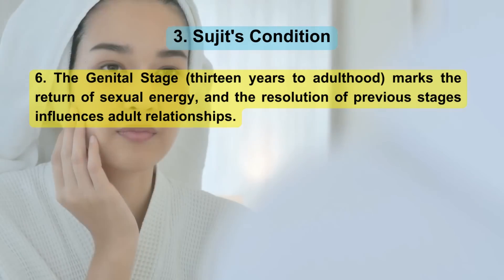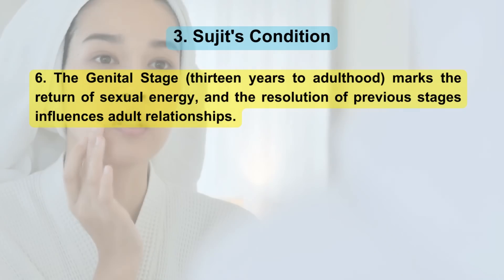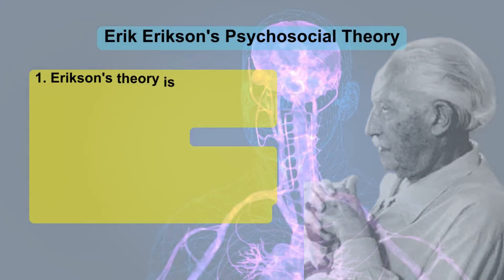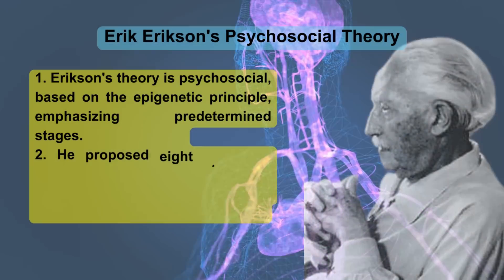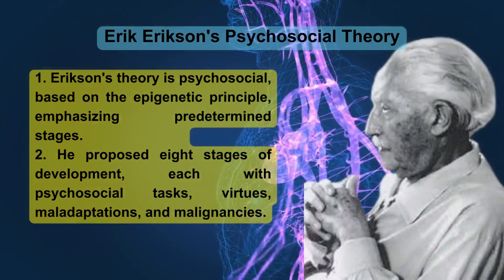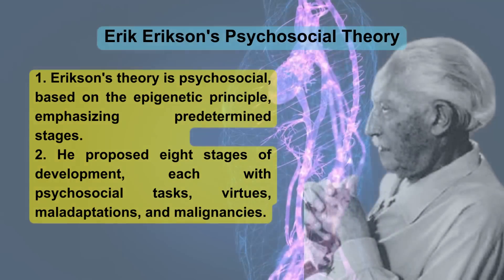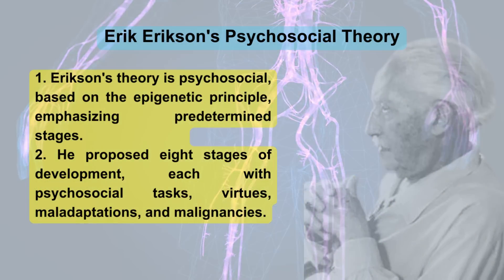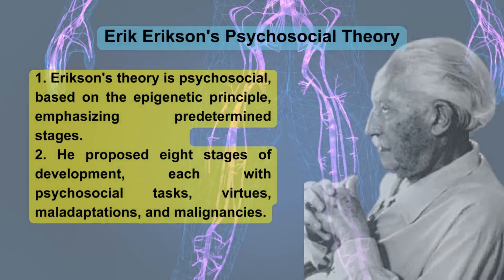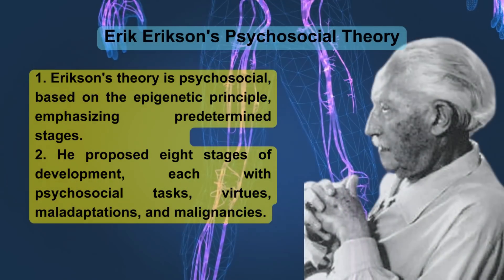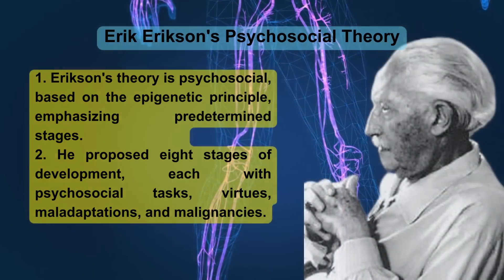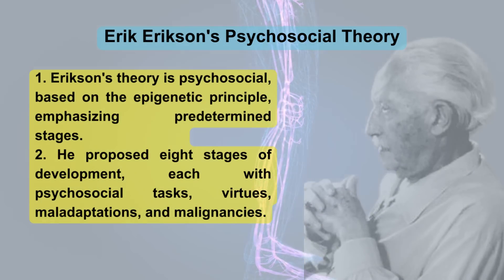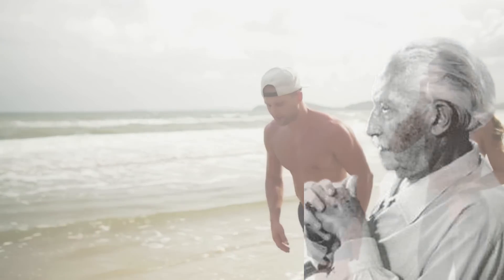The resolution of previous stages influences adult relationships. Erik Erikson's psychosocial theory is based on the epigenetic principle, emphasizing predetermined stages. He proposed eight stages of development, each with psychosocial tasks, virtues, maladaptations, and malignancies.